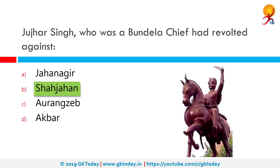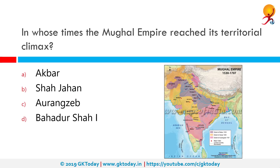In whose times did the Mughal Empire reach its territorial climax? If you look at the map, you can see Aurangzeb's reign has the largest area covered, so the correct answer is Aurangzeb. He was a notable expansionist; the Mughal Empire reached its greatest extent, ruling over nearly all of the Indian subcontinent. Victories in the south expanded the empire to 4 million square kilometers, with a population estimated at over 158 million subjects and an annual revenue of 450 million dollars in 1690. Under his reign, the Mughal Empire surpassed China to become the world's largest economy, worth over 90 billion — nearly a quarter of the world's GDP in the 1700s.